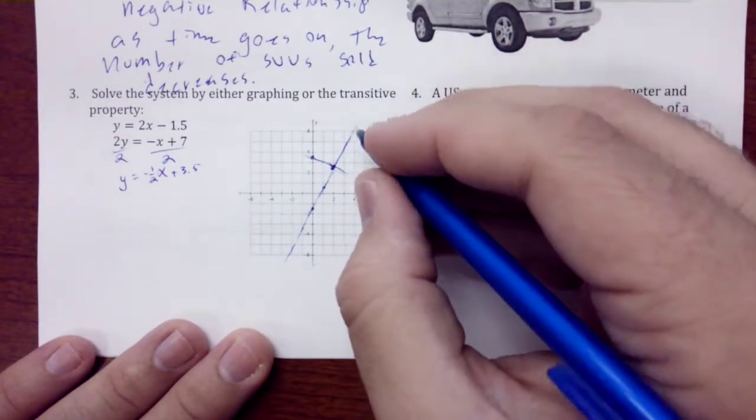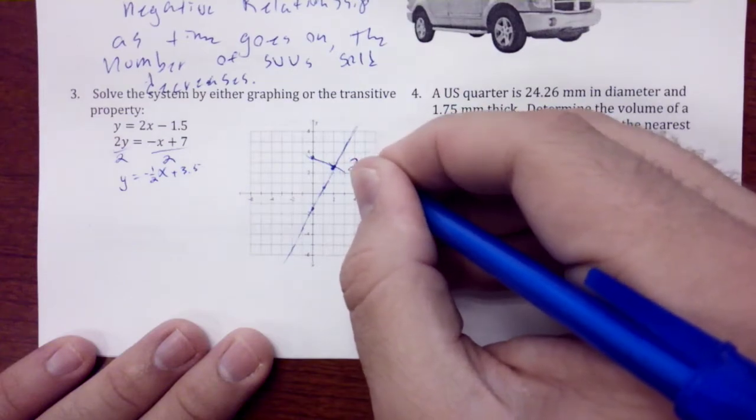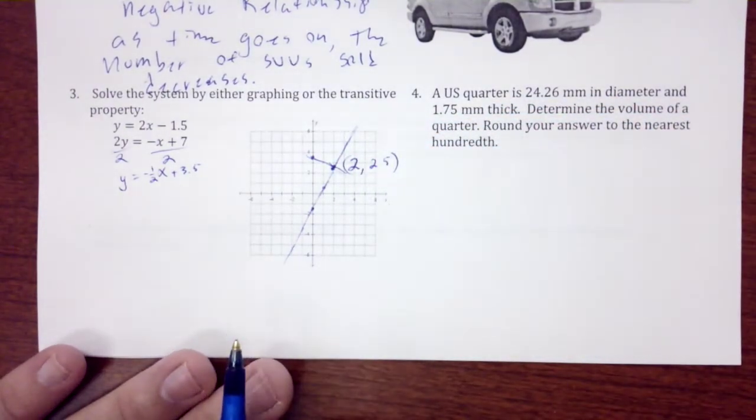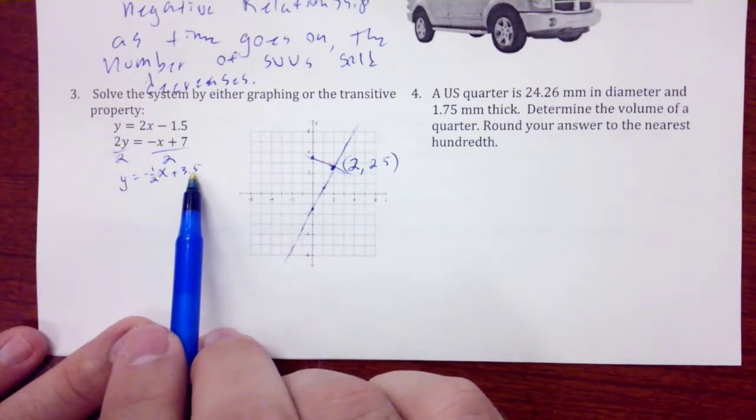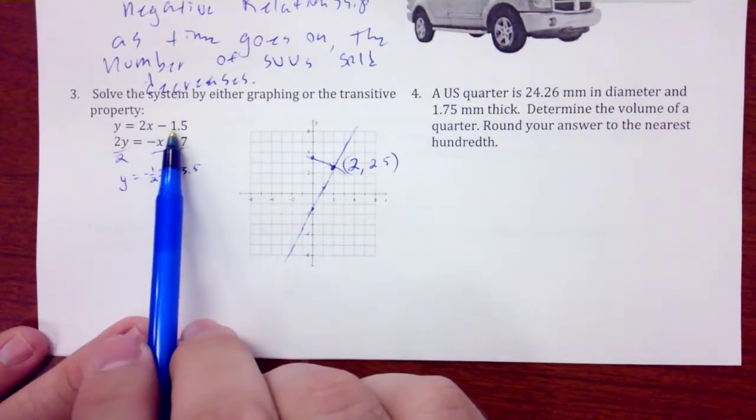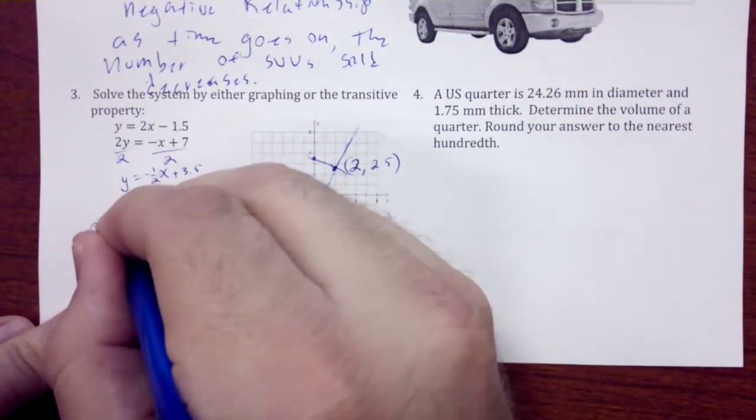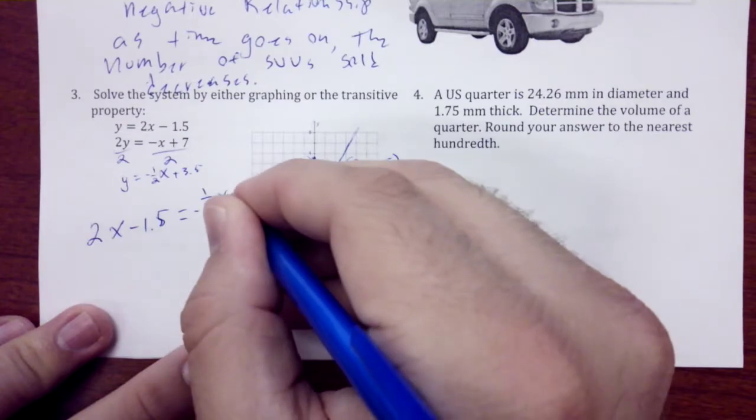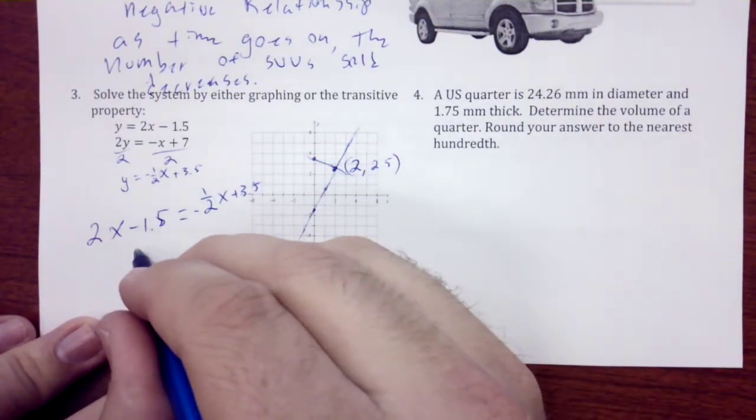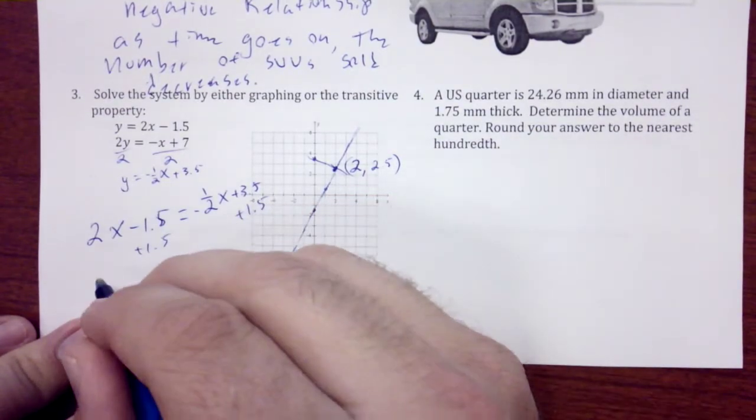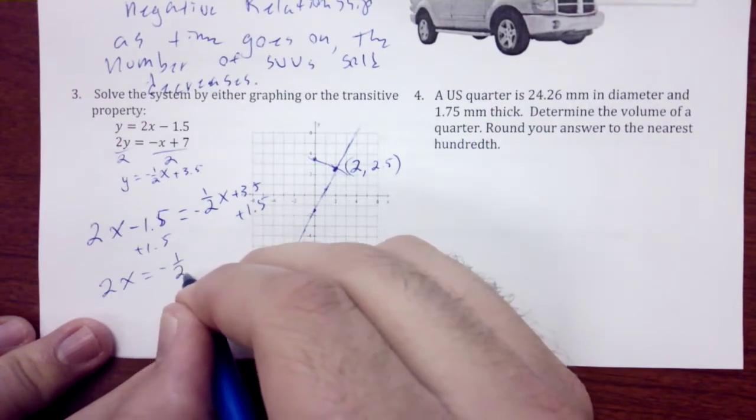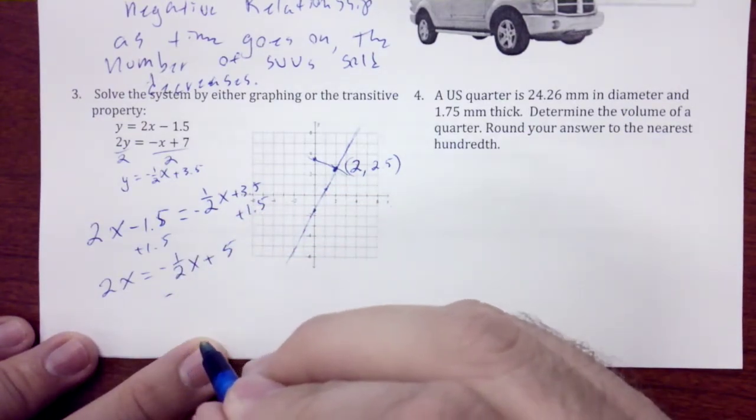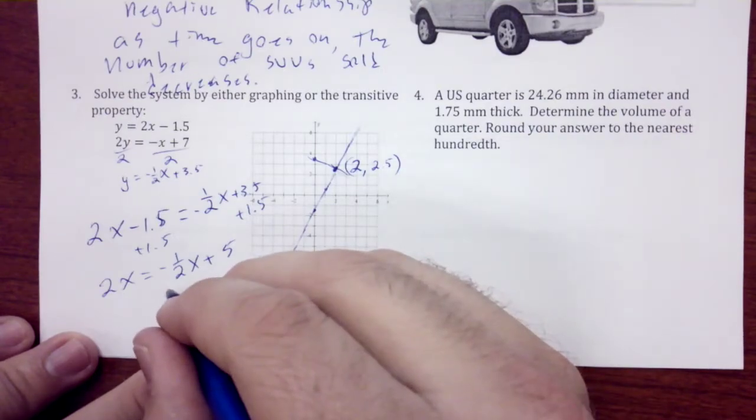Just to show you that we can do that with solving, we have y = -1/2x + 3.5 and y = 2x - 1.5. So 2x - 1.5 = -1/2x + 3.5. I'm going to add 1.5 to both sides. 2x = -1/2x + 5. Going to add 1/2x to each side.